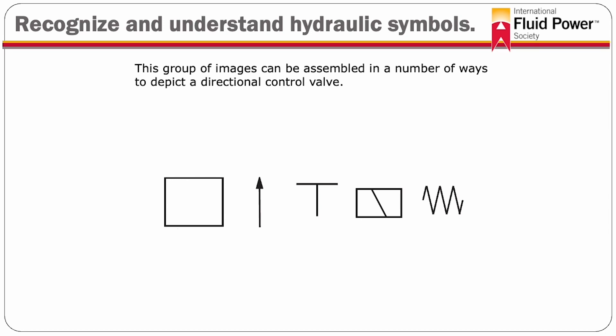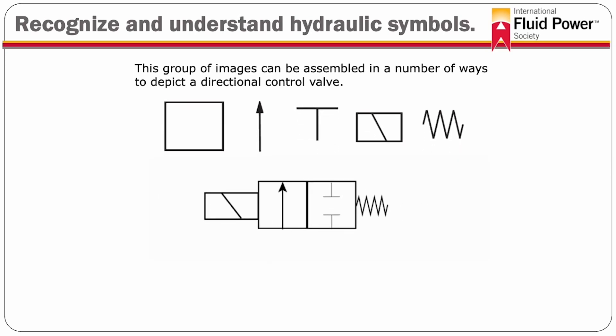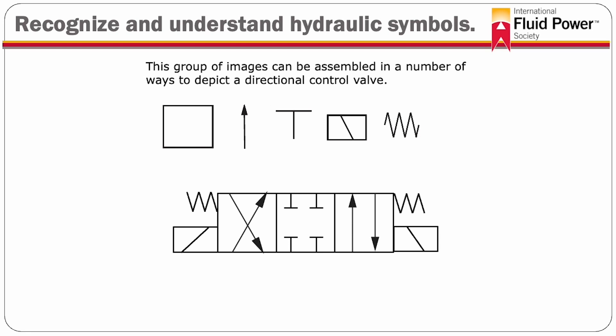The symbols that represent components within a fluid power circuit diagram are made up of a combination of images. Learning these images is much like learning the alphabet of a language. Once the images are understood, any symbol can be spelled out to reveal its meaning. Most of the images that make up the symbols are common among the branches of fluid power. Some symbols are exclusive to one branch or another, but the images that make up those symbols are common.